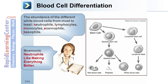The abundance of the different white blood cells from most to least is neutrophils, lymphocytes, monocytes, eosinophils, and basophils. This can be remembered with the mnemonic: neutrophils like making everything better.